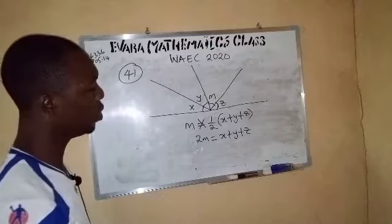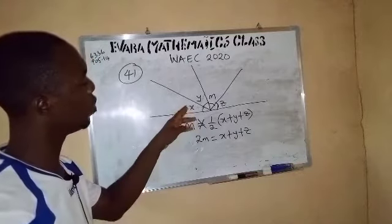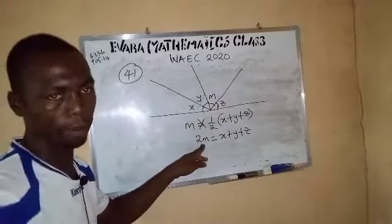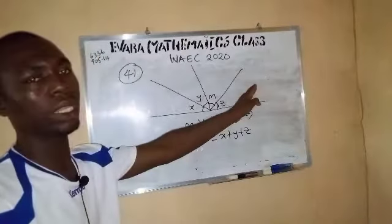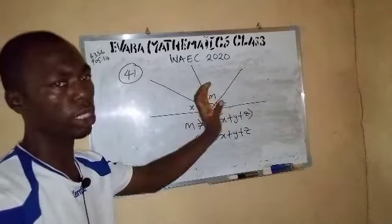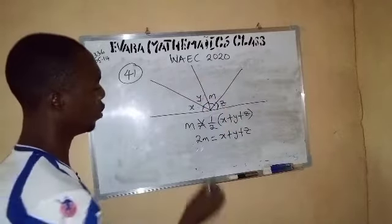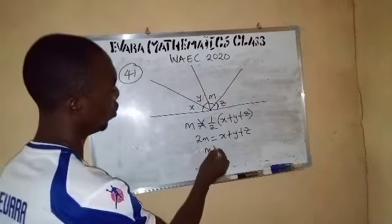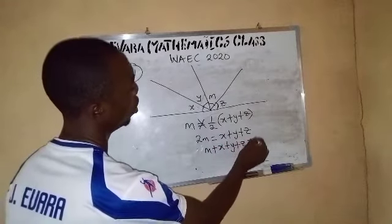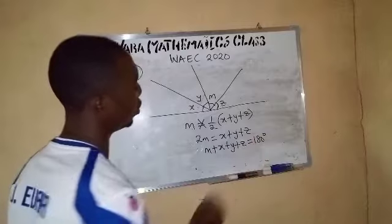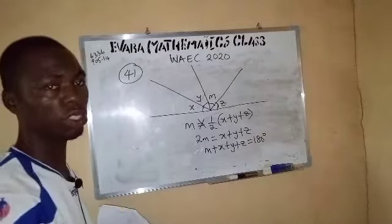This one means the sum of this, this, and this is 2m. And the sum of angles on the straight line is 180 degrees. You can see that m plus x plus y plus z equals 180 degrees because there are angles on the straight line.